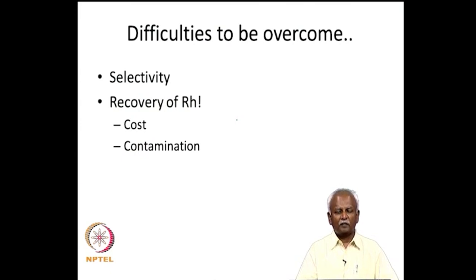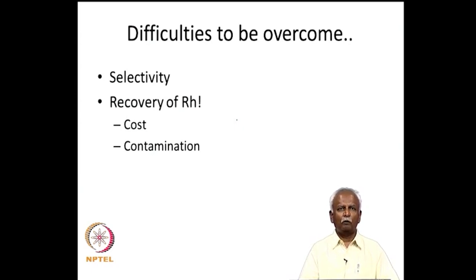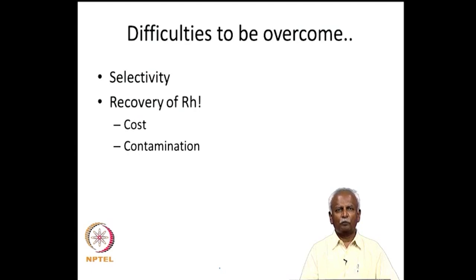The hydroformylation reaction is actively pursued because it gives a convenient entry into aldehydes, and it must be done very selectively. Rhodium is a very expensive metal, so one normally tries to recover it after the reaction — this itself is an expensive process. One must also avoid contamination of the product with rhodium catalyst. Early processes were so inefficient that the concentration of the catalyst in the product was greater than the concentration of the metal in the ore from which it was initially synthesized.